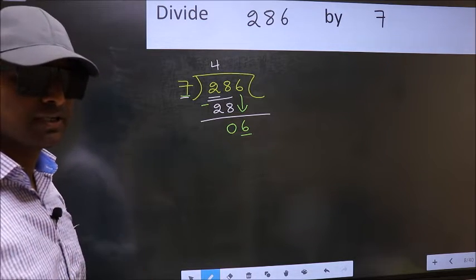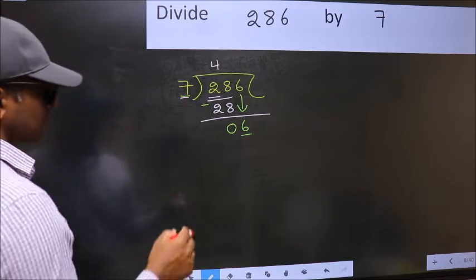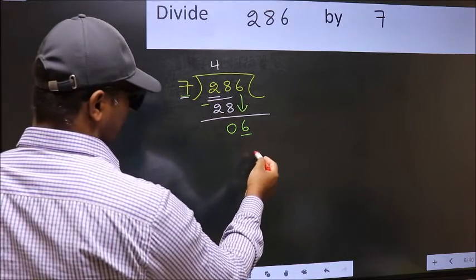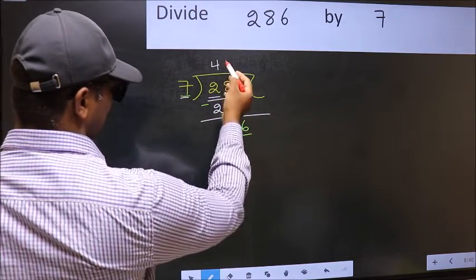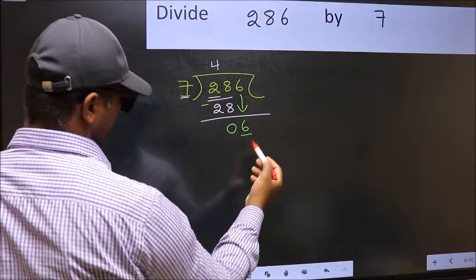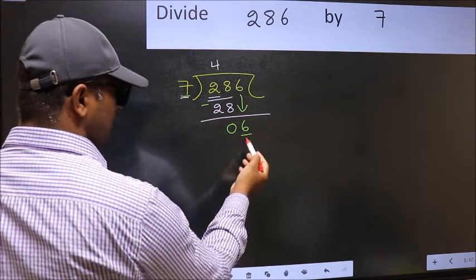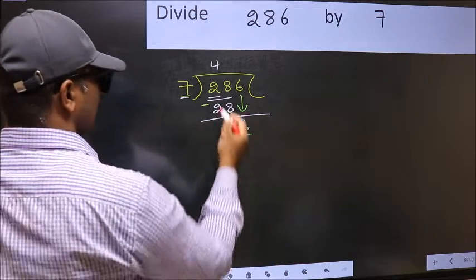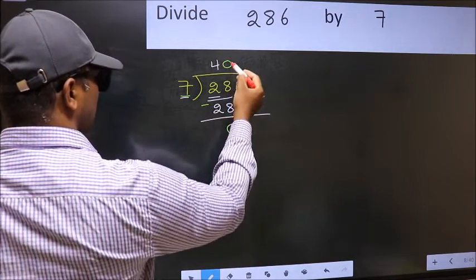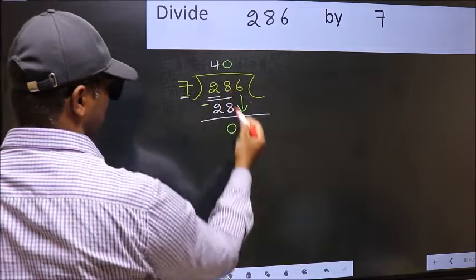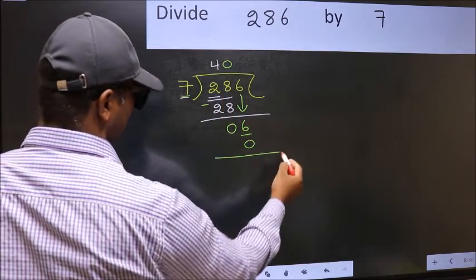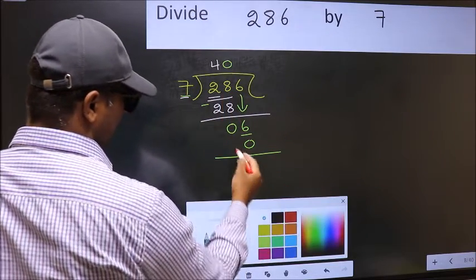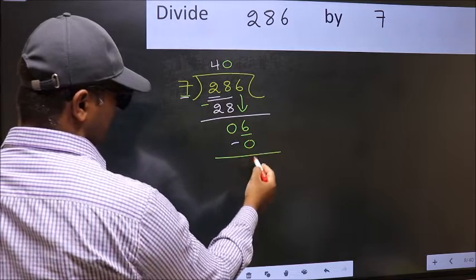Instead, what you should think of doing is, what number should we write here? If I take 1, we will get 7. But 7 is larger than 6. So what we should do is, we should take 0. So 7 into 0, 0. Now you should subtract. 6 minus 0, 6.